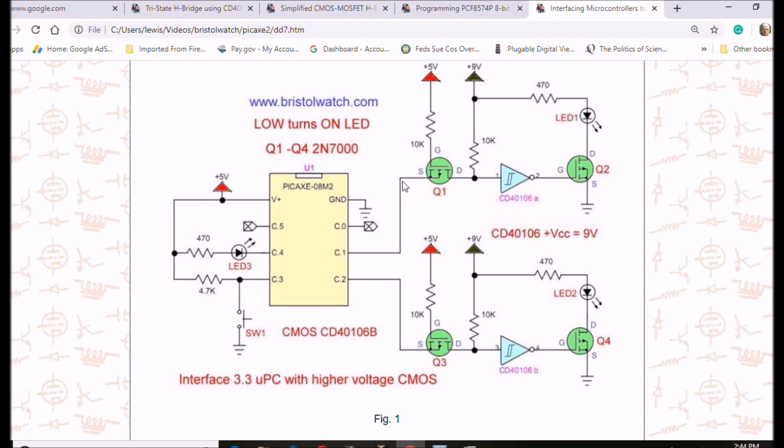A low here is going to be a low here on the drains, low on the source, you'll have a low on the drain, you'll have a high coming out of the CD40106 onto the gate of Q2, it turns on LED lights. Same thing down here, as you saw in the video, one LED lights up and the other one turns off back and forth.